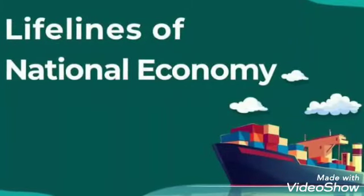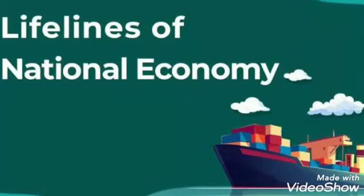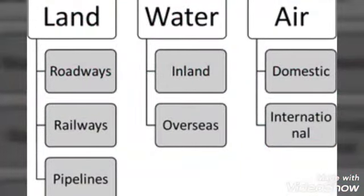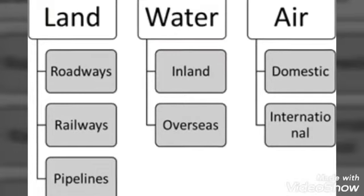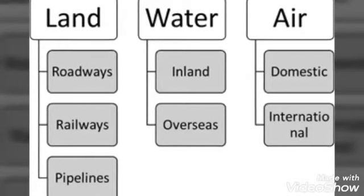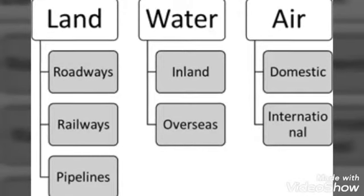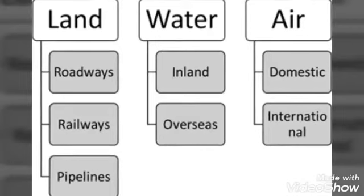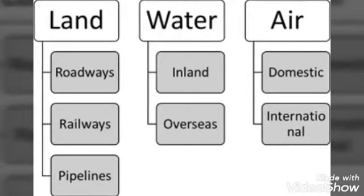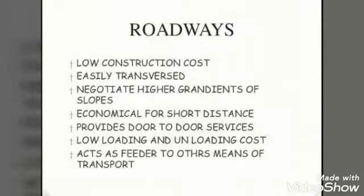Good morning class 10. Let's continue with the chapter 'Lifelines of Indian Economy,' where you have learned that means of transport is classified into three different categories: land transport, water transport, and air transport. Land transport is further classified as roadways, railways, and pipelines. So today you will be studying about roadways.